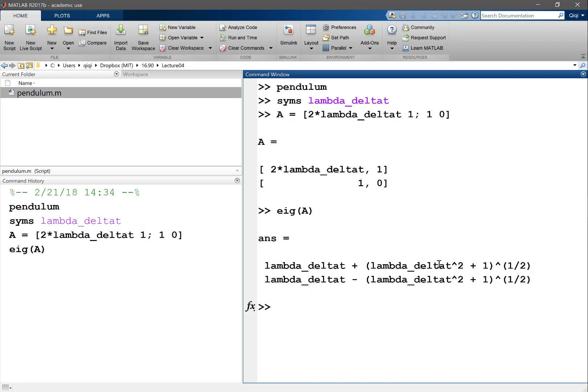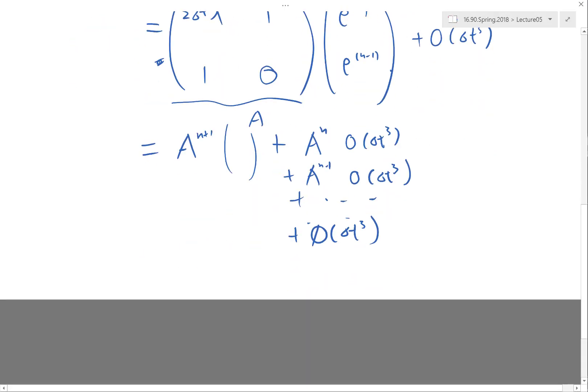Plus this thing and lambda delta t minus this thing, both have to be in the unit circle. The unit circle is a circle centered at the origin having a radius of one, right? So any complex number within that circle when you take it to higher power is going to decay to zero. Anything outside the circle, when you take it to higher power, its magnitude is going to grow to infinity.